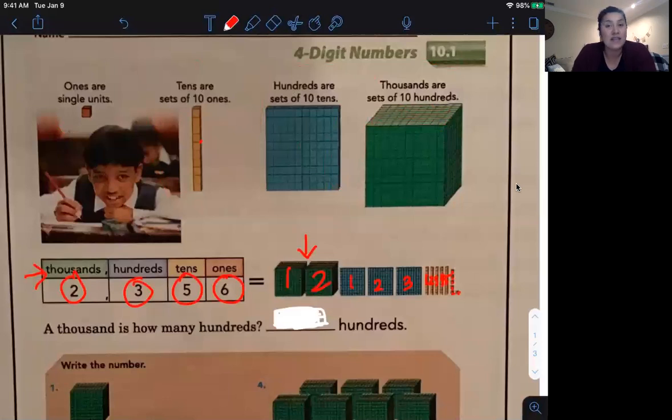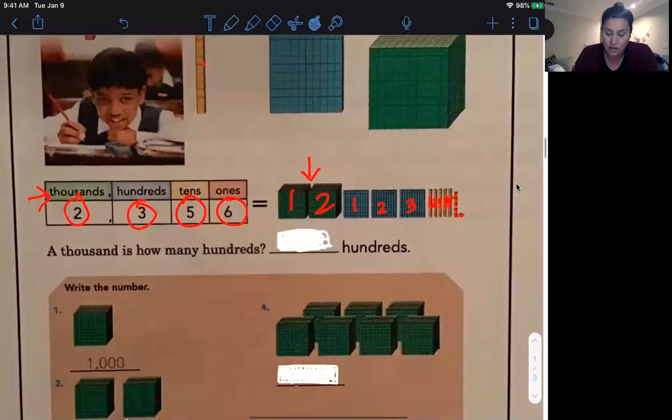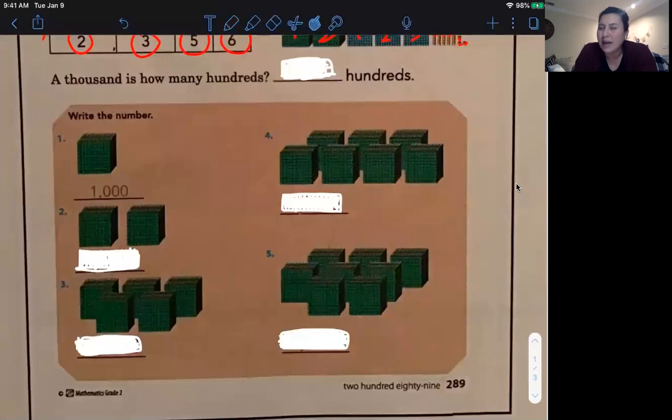And that's that number right there. So do you see how they counted all of those? And they put them in the rooms that they're supposed to be in. Right? Daddy Digit doesn't like any of his digits to be mixed up in other rooms. Right? They have to be in their specific room.